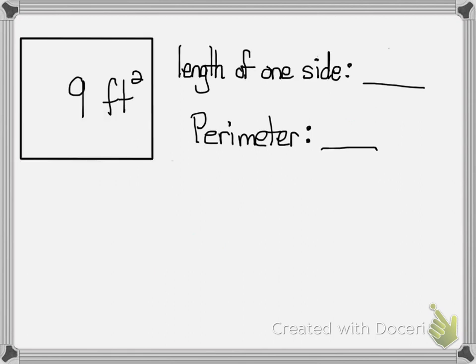Let's look at another example. Here we have 9. The square root of 9 equals 3. So that means the length of one side will be 3 feet. To find the perimeter I'm going to add 3 plus 3 plus 3 plus 3 and that gives me a total of 12 feet.